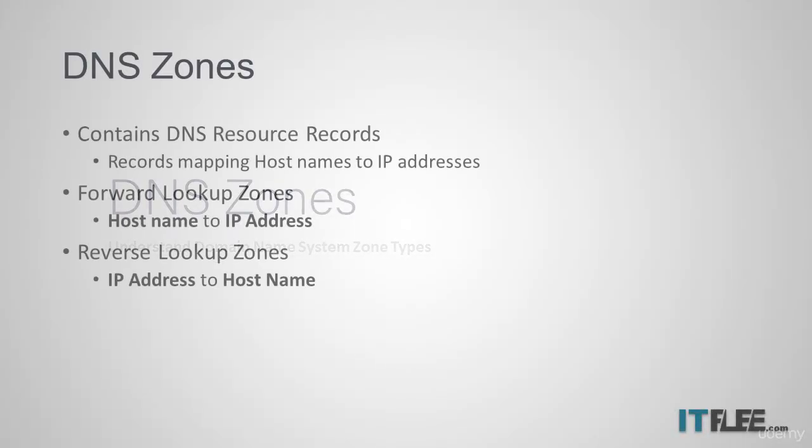A DNS zone is a collection of DNS resource records, like one that might map itflea.com and its respective IP address. There are two main types of DNS zones: forward and reverse lookup zones.